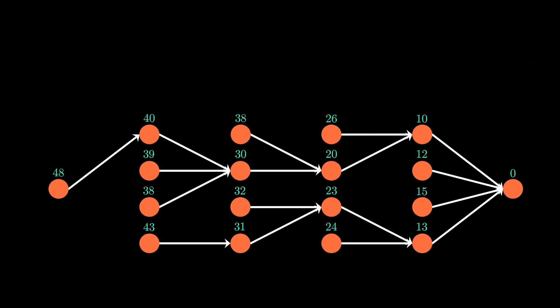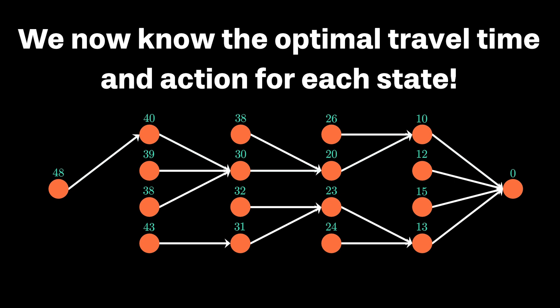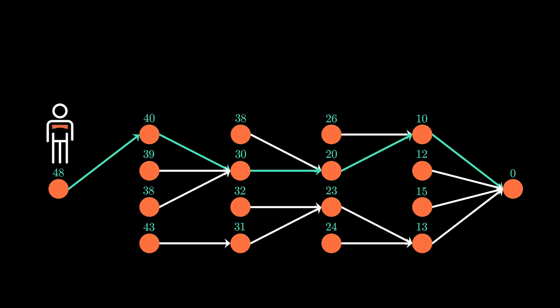What we now have is a diagram that tells us a couple of things. For each node, we know the fastest travel time between it and the final destination. We also know the choice that allows us to minimize our travel time as the arcs have been retained for the optimal route. And so if we were at the starting node, we know that we can reach the final destination in just 48 minutes, and that can be achieved by following the connected path I've highlighted in green.